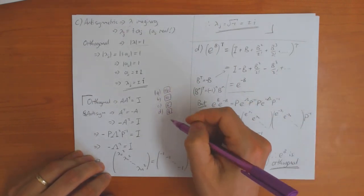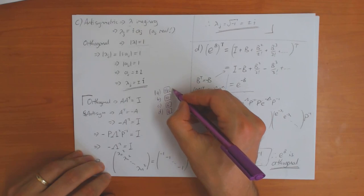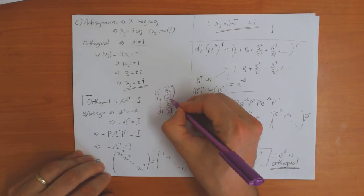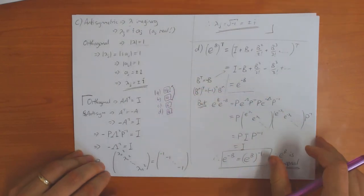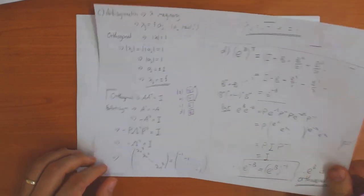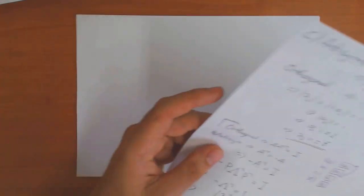In total 38 marks for question 1. Most people got parts (a) and (b) okay, but parts (c) and (d) not so much.